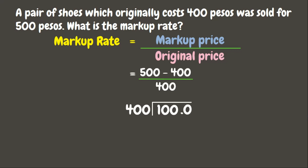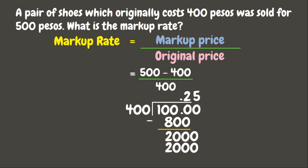500 minus 400 is 100, divided by 400. Since 100 is smaller than 400, we add a zero, giving us 1000 divided by 400. 1000 divided by 400 is 2. 2 times 400 is 800. 1000 minus 800 is 200. Since 200 is smaller than 400, we add another zero. 2000 divided by 400 is 5. 5 times 400 is 2000, and when we subtract, this gives us 0. Our answer is 0.25.